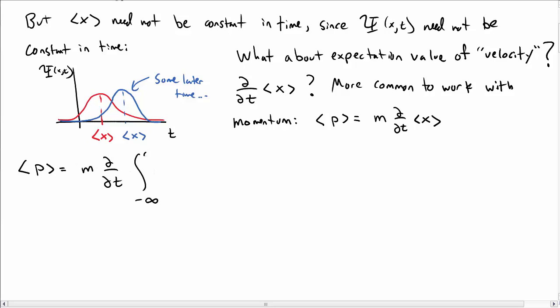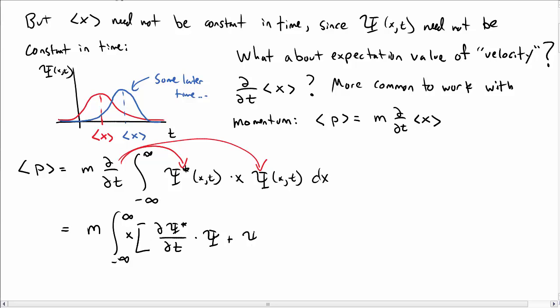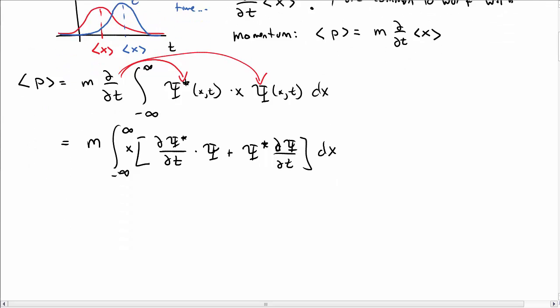So let's use the expectation value of position and write this out. We have m d by dt of this integral psi star times x times psi integral dx. The derivative hits the time dependence in the psi's only. Of course, the x doesn't have any time dependence. So we get two terms distributing the time derivative in. One where the time derivative hits psi star multiplied by x and psi, and another where it hits psi multiplied by psi star and x.